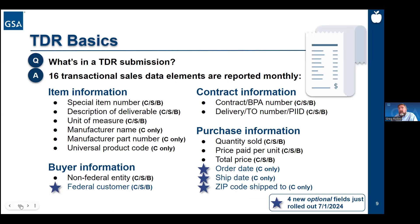Let's talk about TDR data elements. Each monthly transactional data report submitted to us in the sales reporting portal includes rows with 16 columns of data for each sales line. Some fields are collected for products or commodities only, indicated by C-only tags, while others are collected for all transaction types. Think about a TDR report like that receipt — it lists all the line items purchased, the unit prices, quantities, and identifying information. We collect item information including the special item number, a description of the deliverable, the unit of measure, manufacturer name, manufacturer part number, and universal product code.